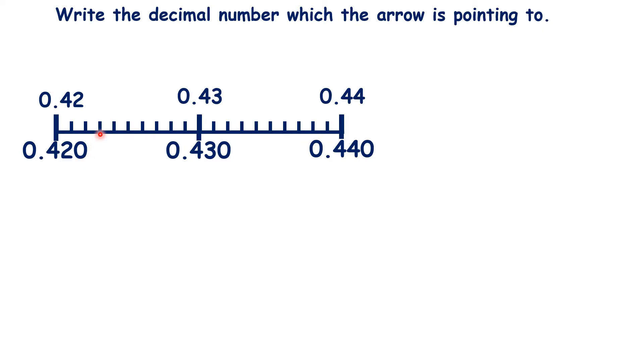But then, remember, we had arrows pointing to 0.423, 0.431, 0.435, and 0.438.